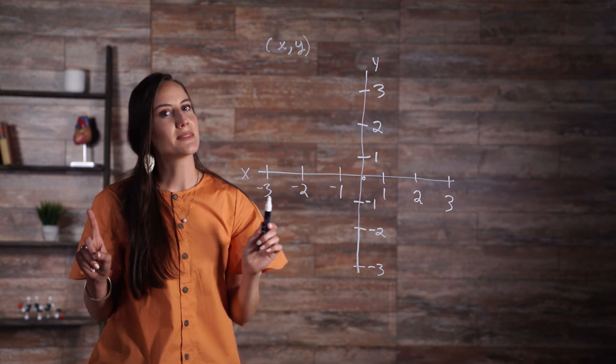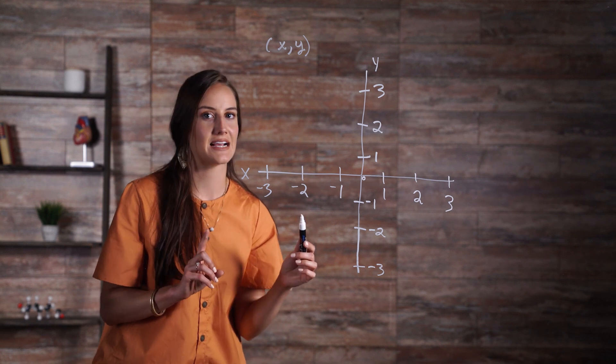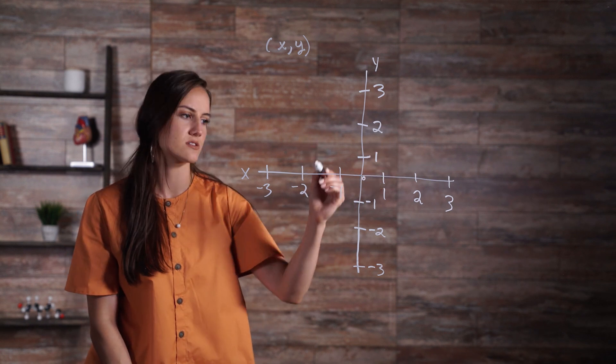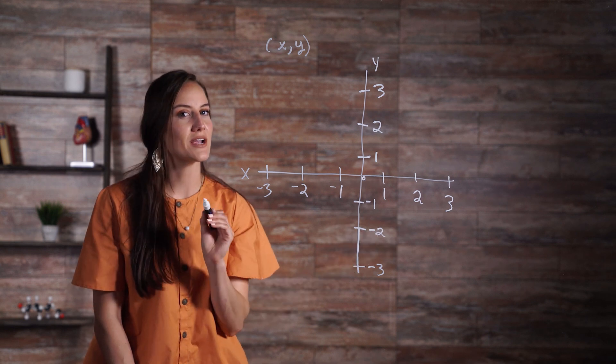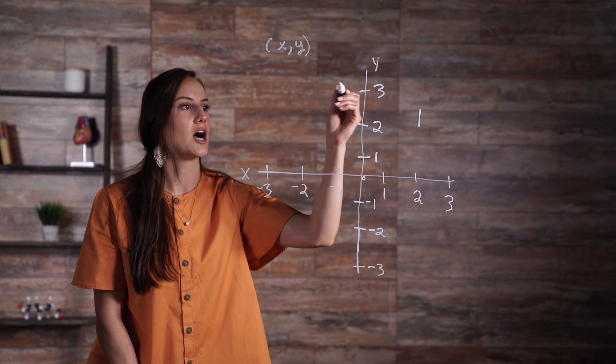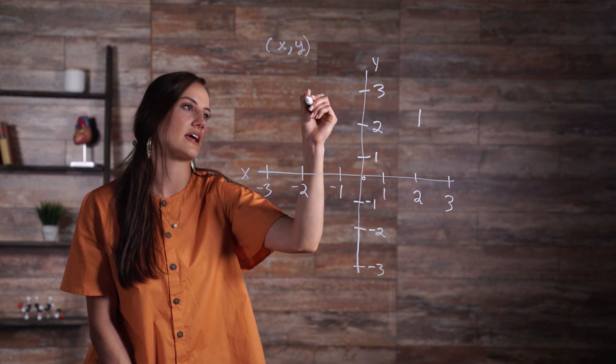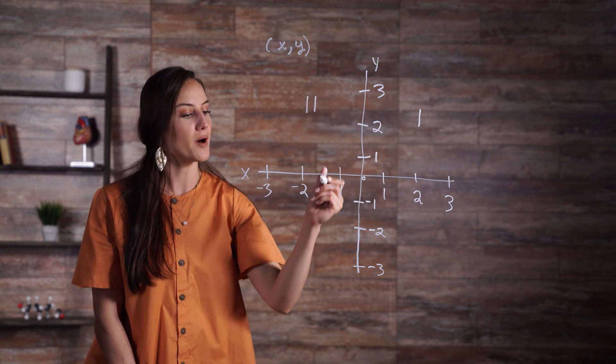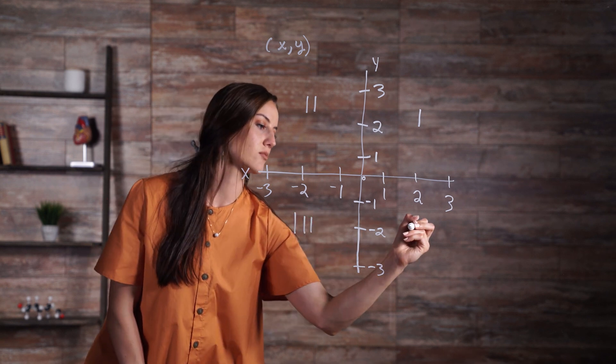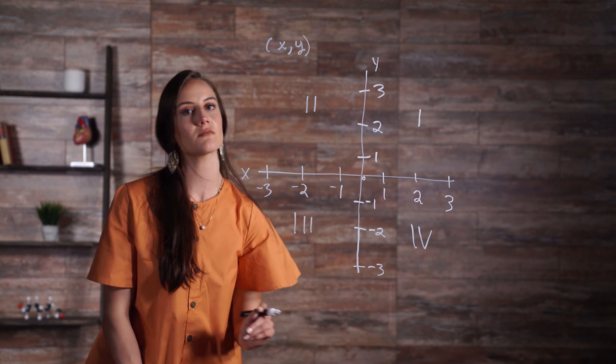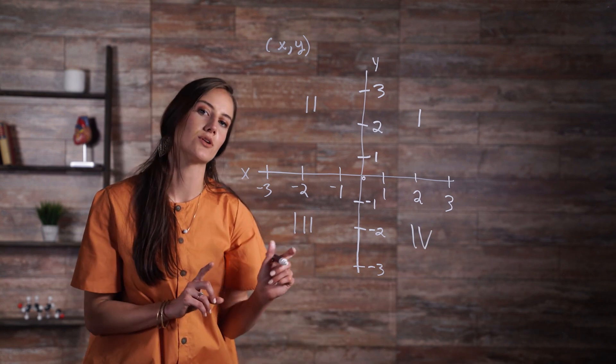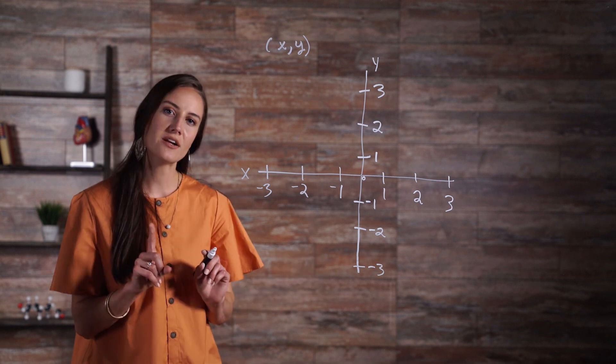You may have noticed that the plane with the intersection of the x-axis and y-axis has four squares. Each of these squares is called a quadrant. The top right is the first quadrant, the top left is the second quadrant, the bottom left is the third quadrant, and the bottom right is the fourth quadrant. As you can see, the quadrants are typically labeled using Roman numerals.